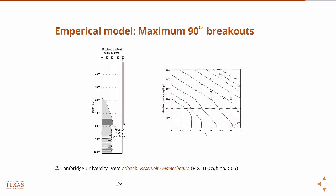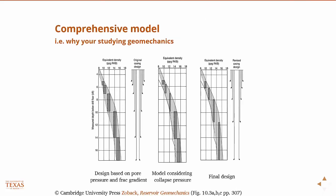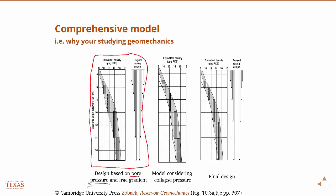The mud window is defined with pore pressure on the low side — you always want to be overbalanced, otherwise the well will flow back while drilling — and the frack gradient on the high side, which is the point at which drilling-induced tensile fractures are created. The original casing design for this well was based only on pore pressure and frack gradient.